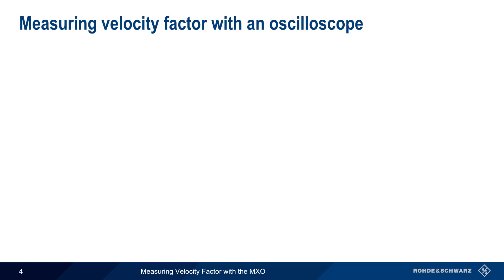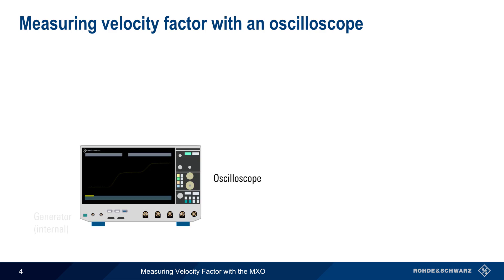One of the methods for measuring velocity factor is using an oscilloscope and a function generator, which can be either an internal generator, as shown here, or an external generator.